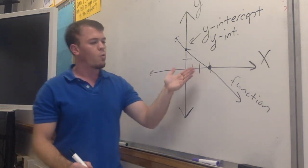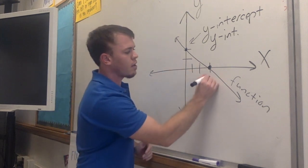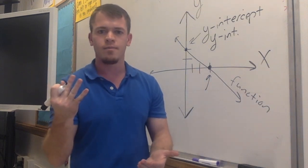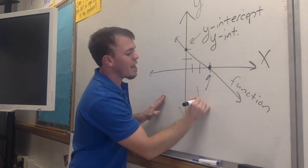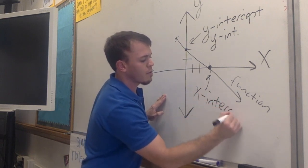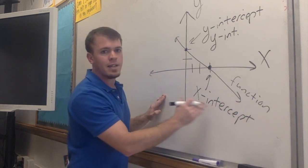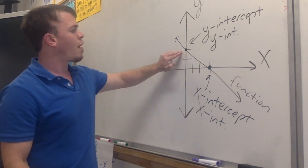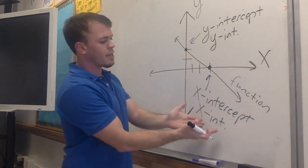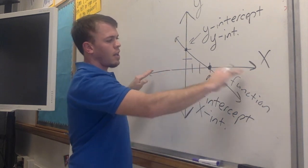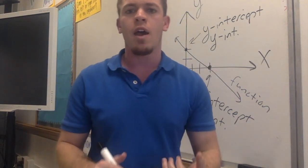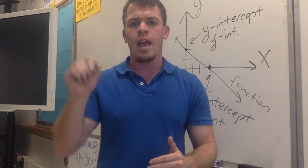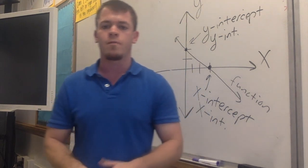In the future, instead of writing y-intercept, I'm going to abbreviate it as y-int. Obviously, if this is our y-intercept, we want to ask what is this other point? We know it's crossing the x-axis, which would make it the x-intercept — I'll abbreviate that as x-int. So one more time: our y-intercept is where our function crosses the y-axis, and our x-intercept is where our function crosses the x-axis. You have five problems — pause this video and label the x and y-intercept on each one.